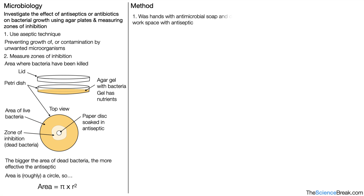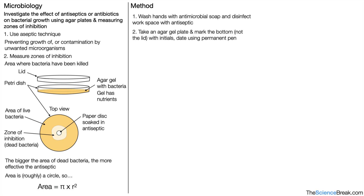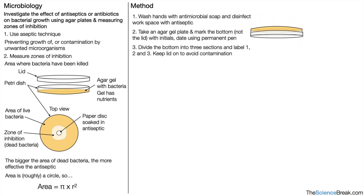The method. First, we wash our hands with antimicrobial soap and we disinfect our workspace using antiseptic. We then take an agar gel plate and mark the bottom — not the lid — with our initials and date using a permanent pen. We flip the dish over and divide the bottom into three sections, labelling them 1, 2, and 3.